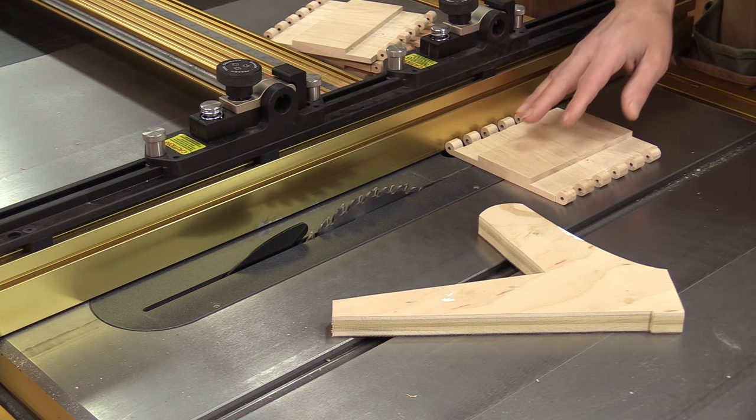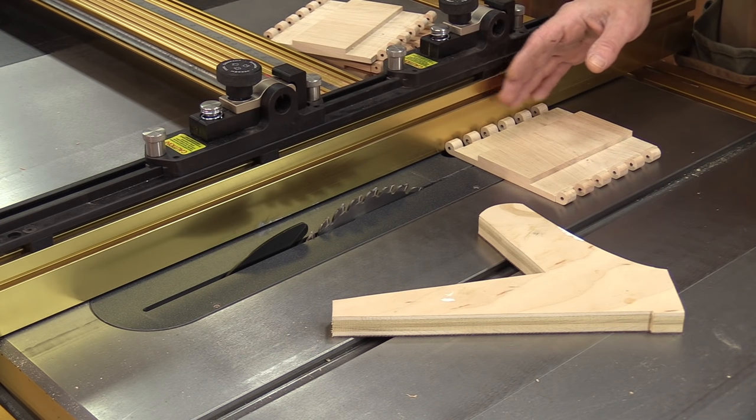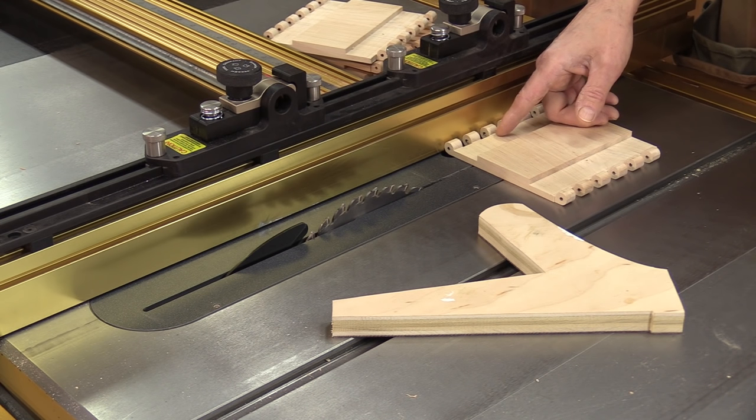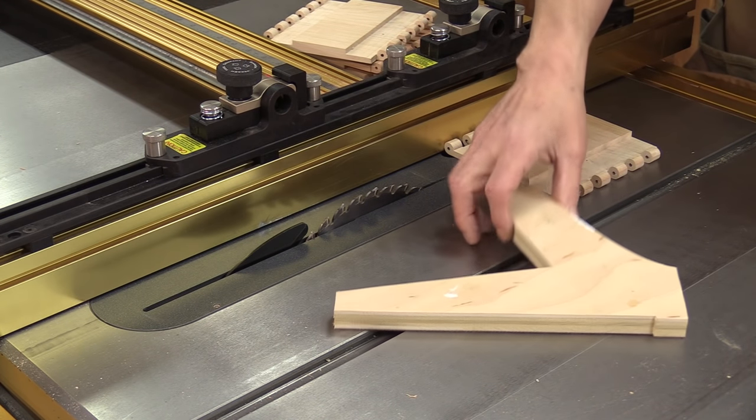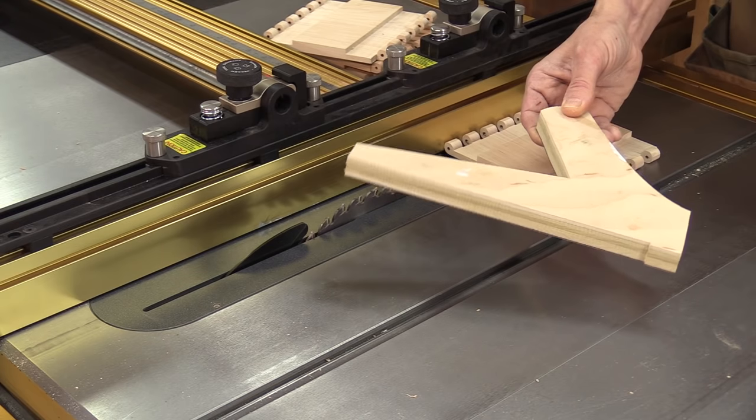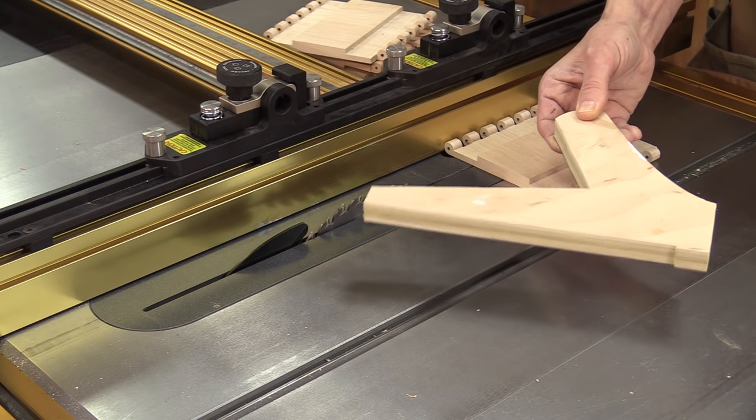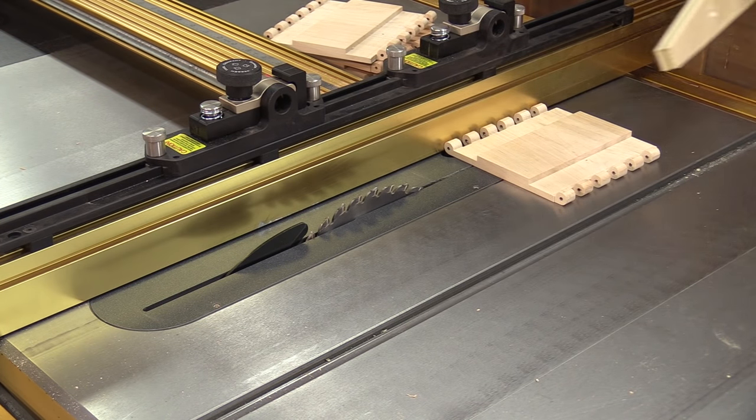I'm going to release the hinges from the blank now. I've got the fence set an inch and a half, that's a half inch for the barrel and I want a one inch leaf. I've also made a special push stick for this. Now this is included in the plans with the hinge crafter, so I just need to cut these out.